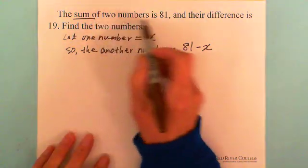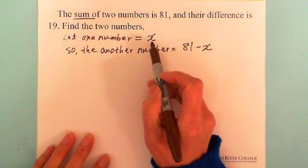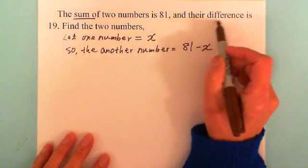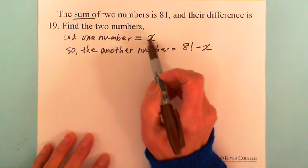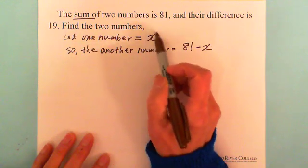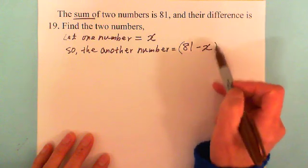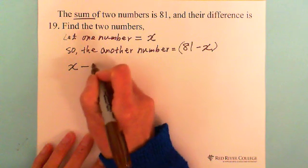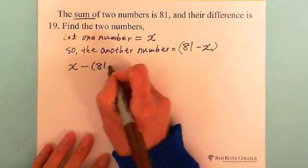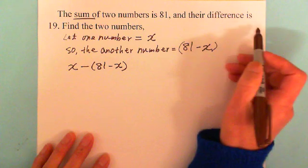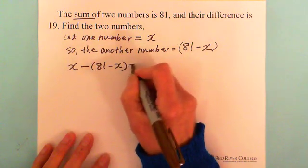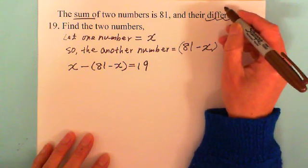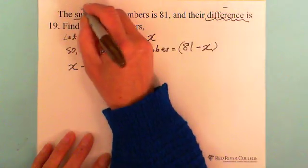Using the first sentence setting, we now apply the second condition: their difference is 19. So we subtract one number from the other. We write x minus (81 minus x) equals 19. Difference means subtraction, while sum means addition.